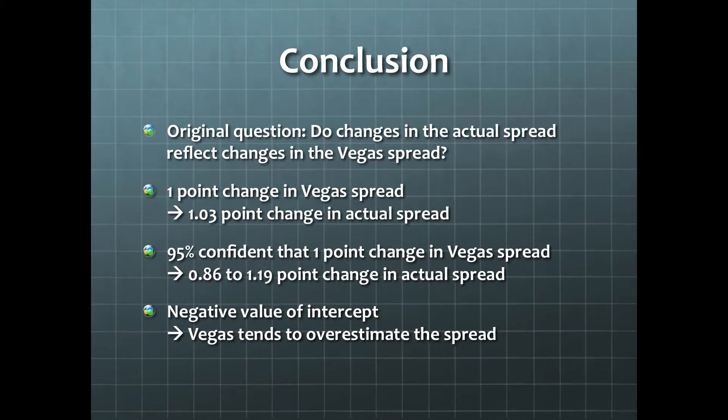Also, the negative value of beta-naught implies that Vegas tends to overestimate the spread. In other words, Vegas tends to favor the home team a little too much.